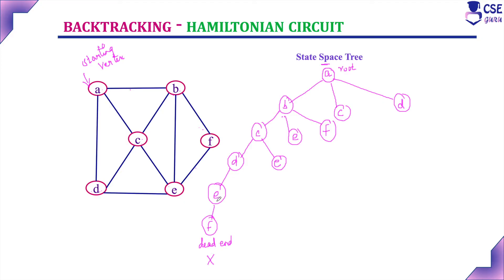Backtrack to the previous state, E. Any other possibility for E? No — C and B are already visited. We visited E then F, and from F it did not provide a feasible solution. So backtrack from E to the previous state D. From D, the only possibilities are C and E — C is already visited, and E has already been checked. No other possibility for D, so backtrack to the previous state.